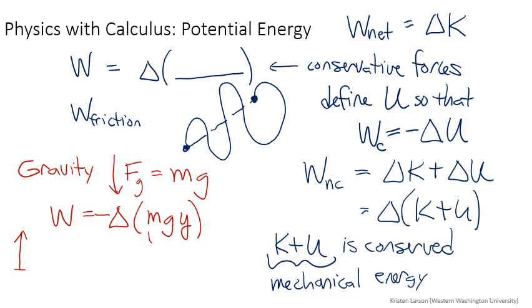then this will be negative, the difference in MgY. So we can then define this function as U. And so the potential energy near the Earth is just going to be MgY.